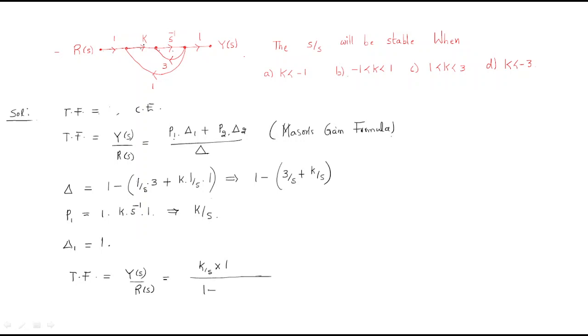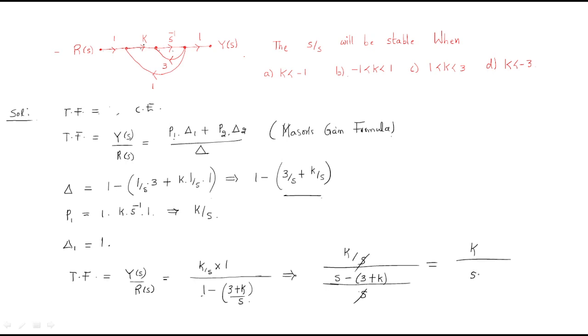Substituting Δ = 1 - (3+k)/s = (s - 3 - k)/s, the transfer function becomes T(s) = (k/s) / ((s - 3 - k)/s). After cancellation: T(s) = k / (s - 3 + k). Wait — the denominator gives the characteristic equation as s - 3 + k = 0, equivalently s + (k - 3) = 0.